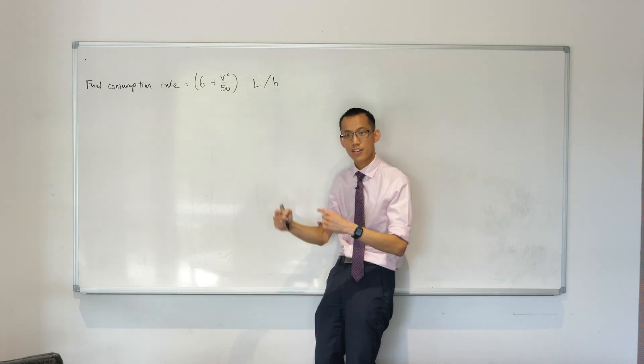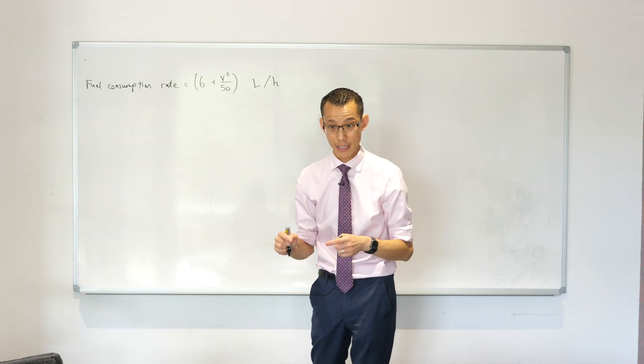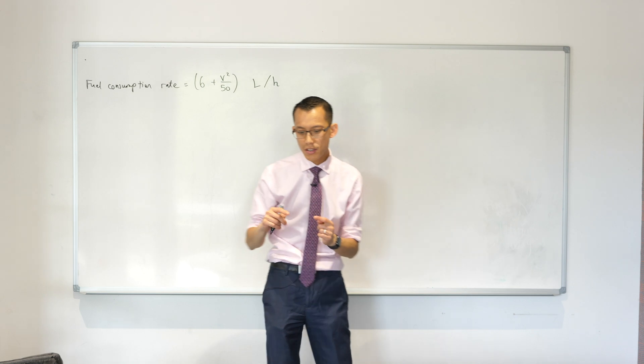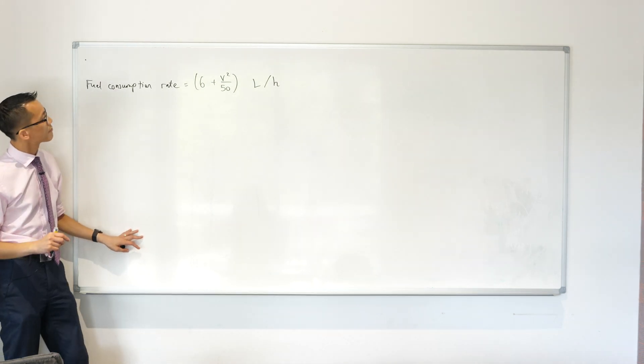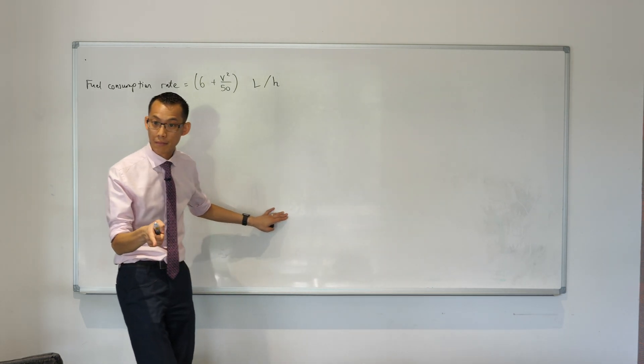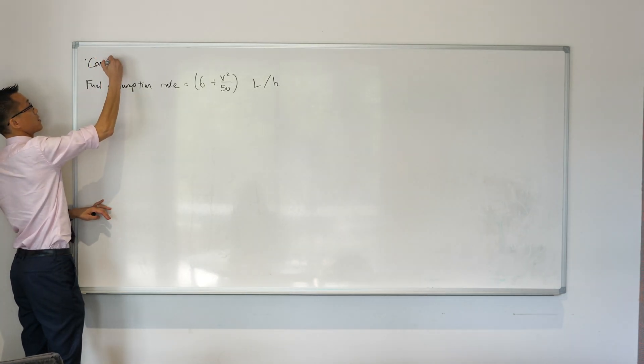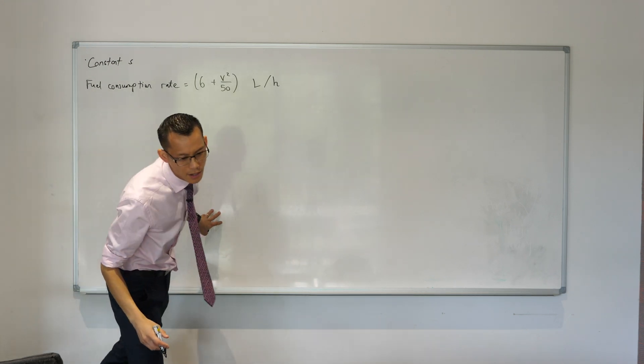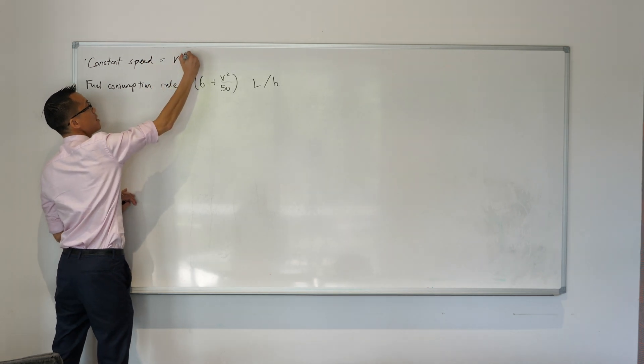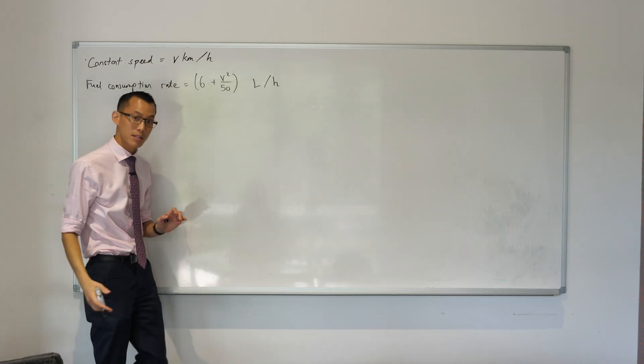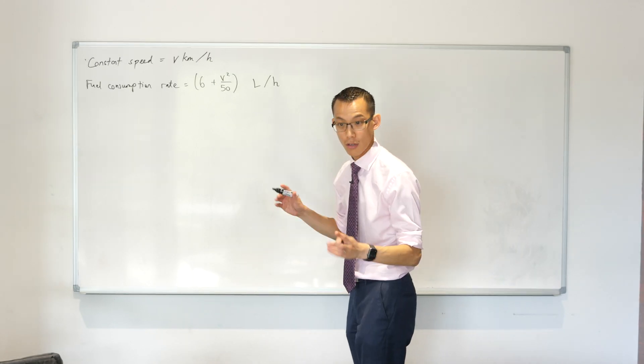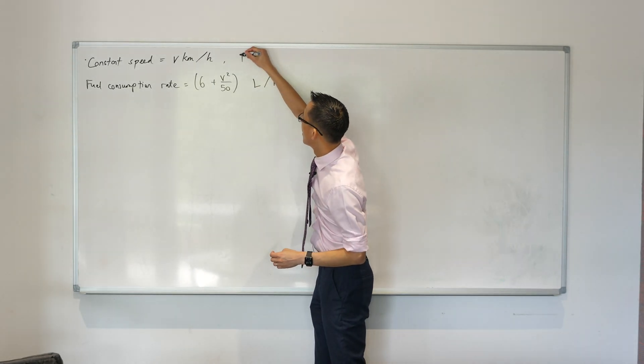Before we move off of this, can I actually just rewind a step, go back to that very first sentence. There's some information in there that's also important which is not in the form of an equation but it still matters. Okay fantastic, so I've got a constant speed that the vehicle is traveling at, V kilometers per hour. Is there anything else essential in that first sentence? All right good, so this is the total journey, a thousand kilometers.